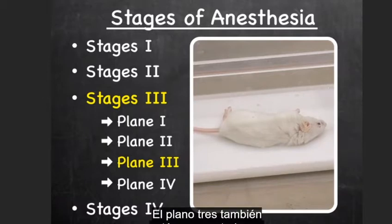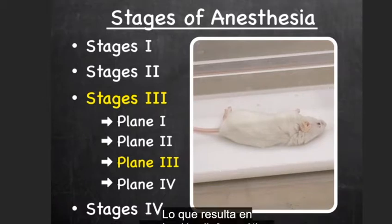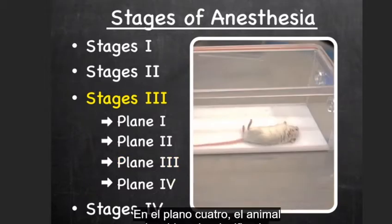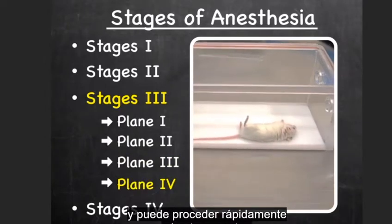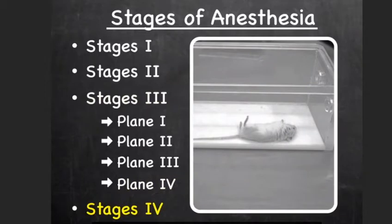Plane three is also signified by paralysis of the intercostal muscles, which results in diaphragmatic respiration — that is, shallow breathing. In plane four, the animal has been overdosed and can proceed quickly into stage four, where there is complete paralysis of both intercostal muscles and diaphragm, which can cause respiratory arrest and ultimately lead to death.